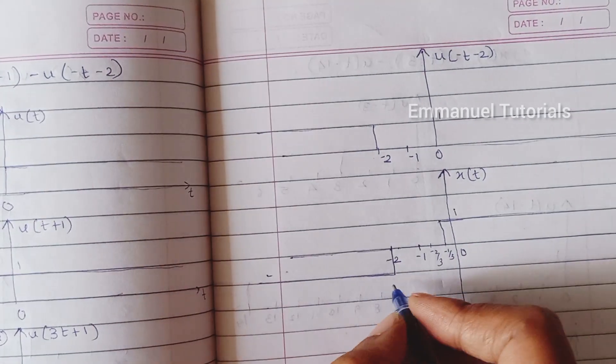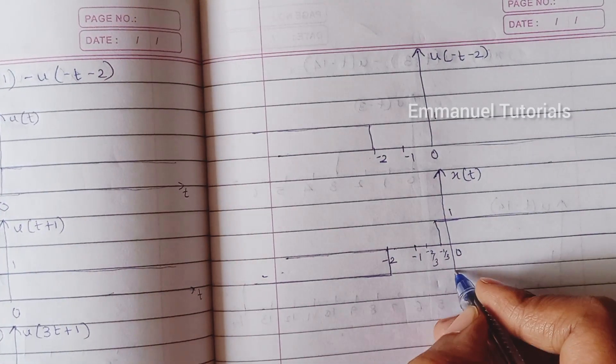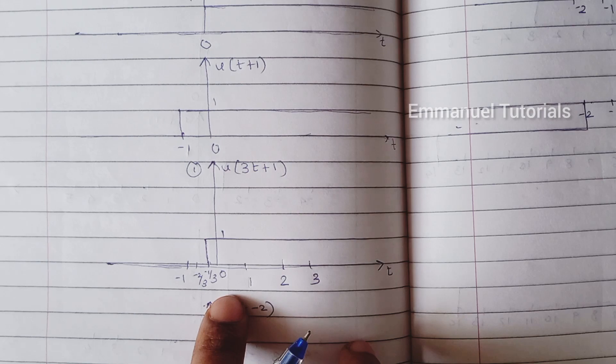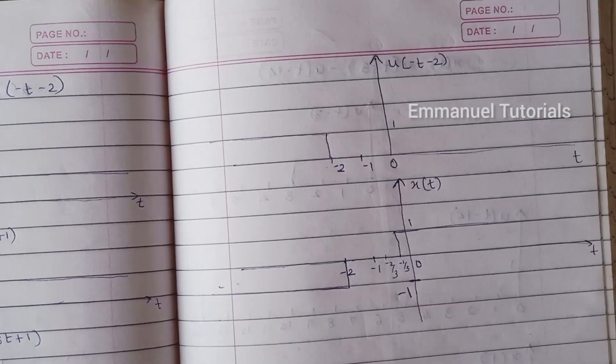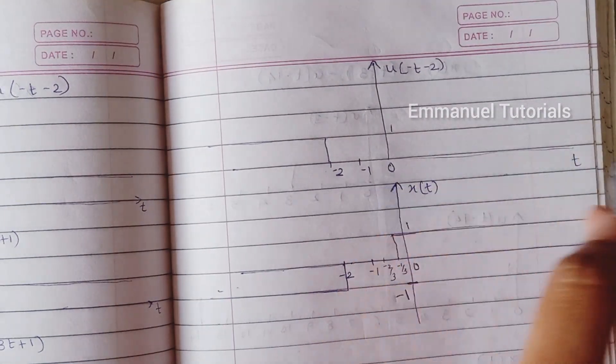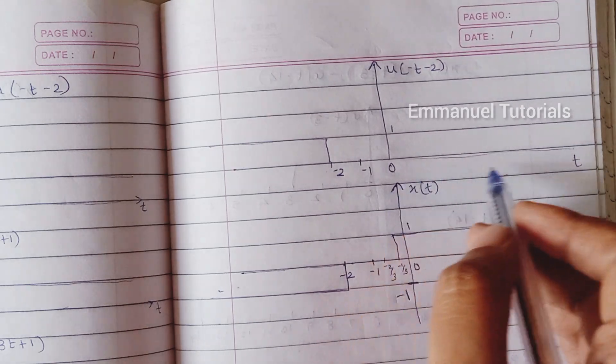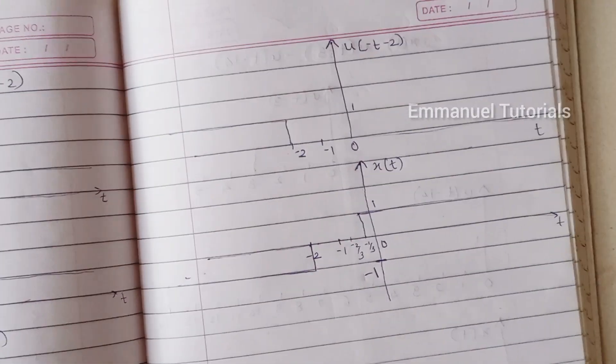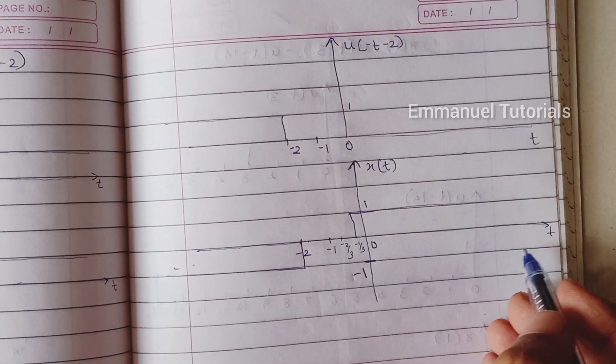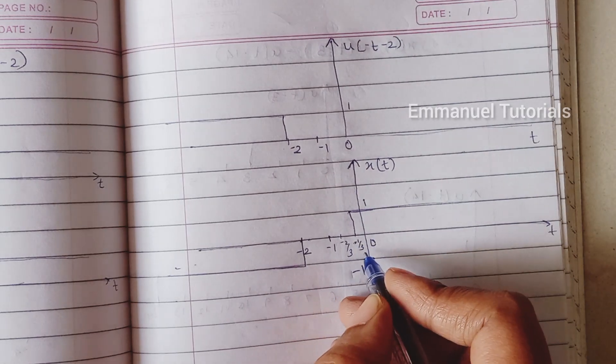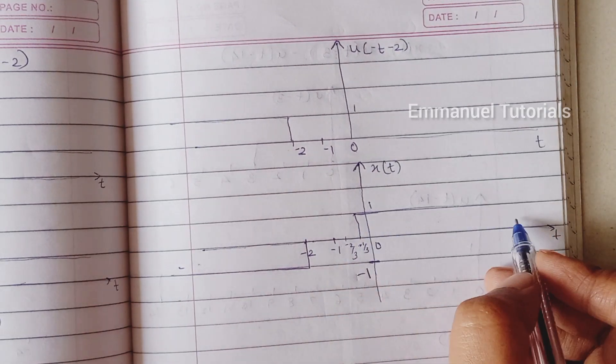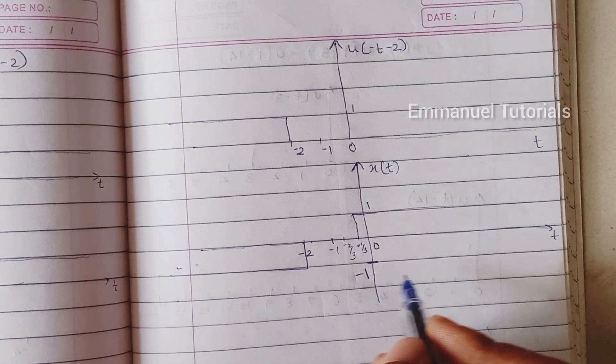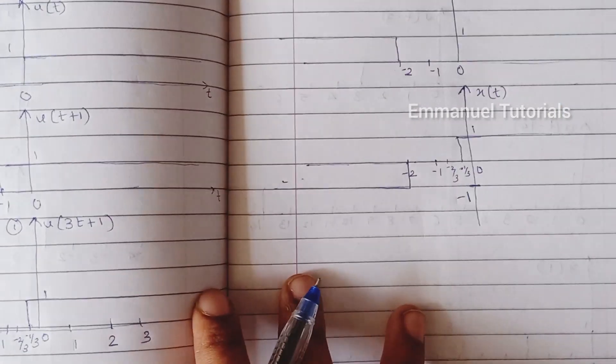So from minus infinity to minus 2, amplitude is going to be minus 1. And this first signal is starting from minus 1 by 3, and second signal if you see from minus 1 by 3, there is no amplitude, it is 0. So first signal minus second signal, that is 1 minus 0, is going to be 1 from minus 1 by 3 to infinity. So I have just plotted minus 1 by 3 here. So from minus 1 by 3 to infinity the amplitude is going to be 1. So this is what we are expecting when we subtract the signal. Hope you understood this. This is what our output is supposed to look like.